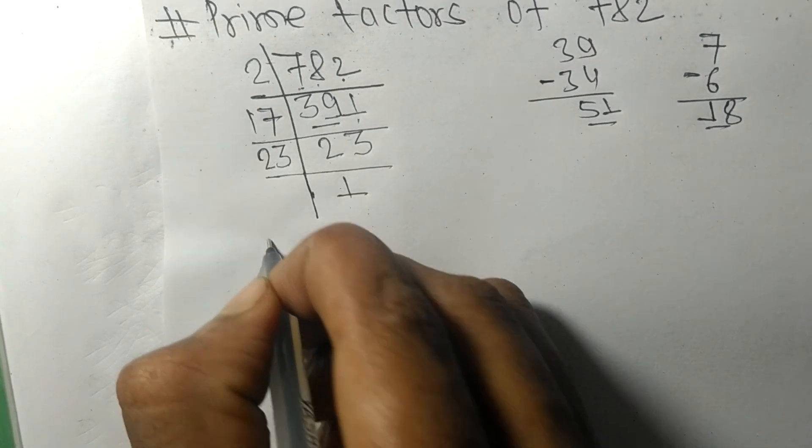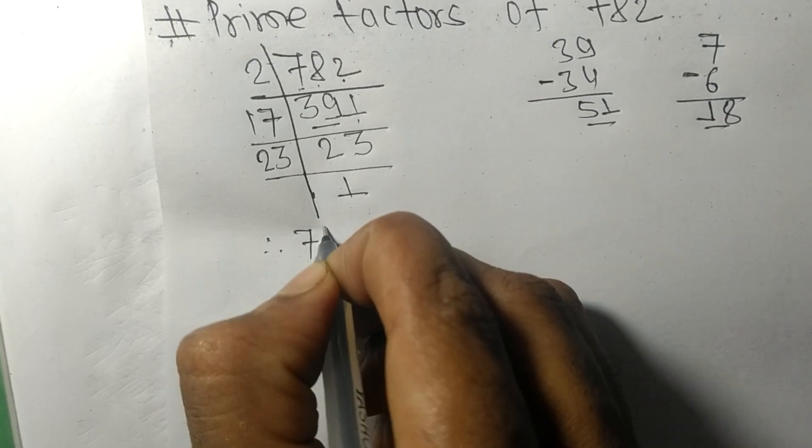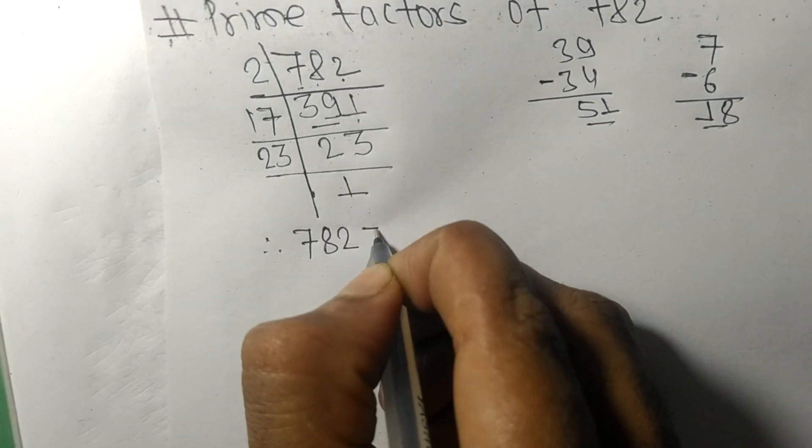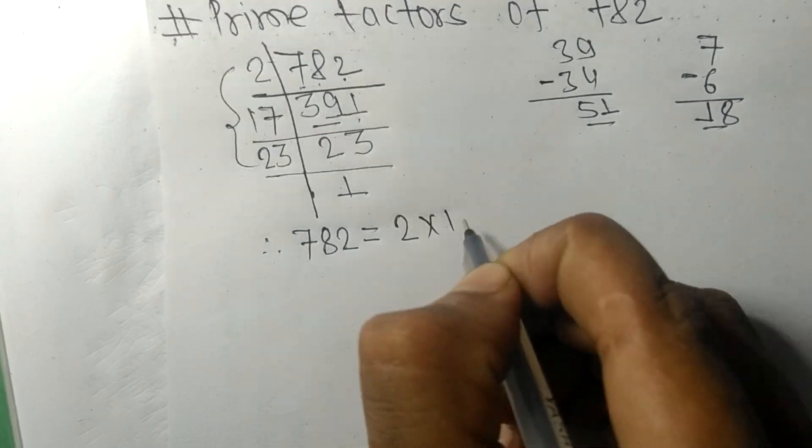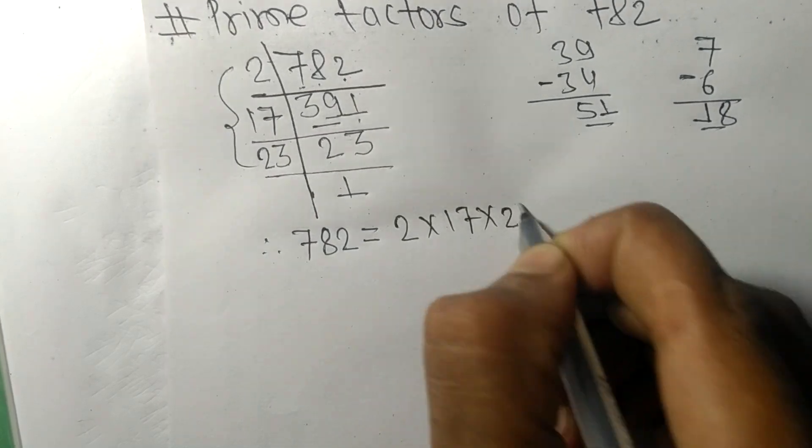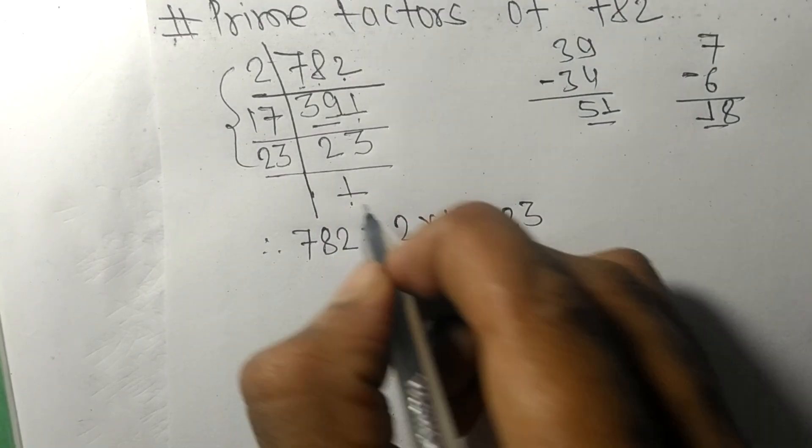Therefore, 782 is equal to 2 times 17 times 23 times 1.